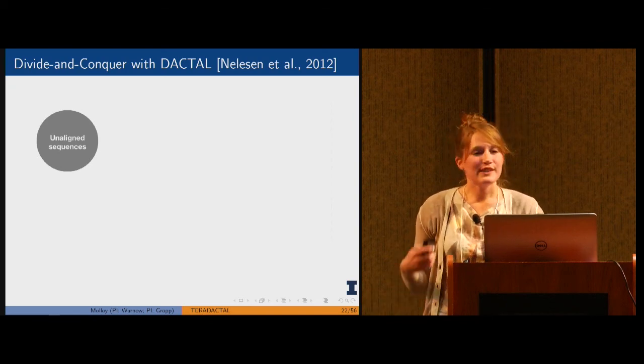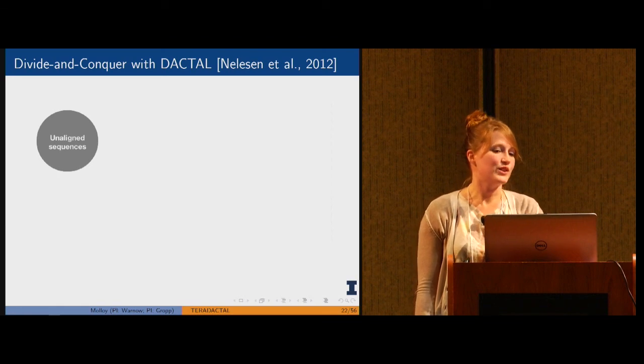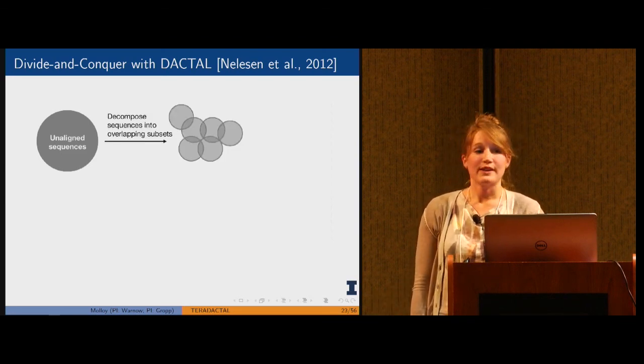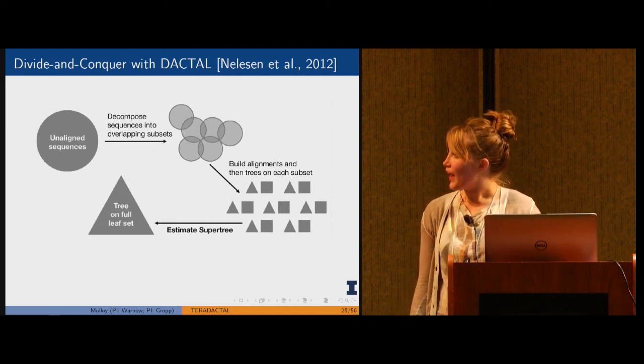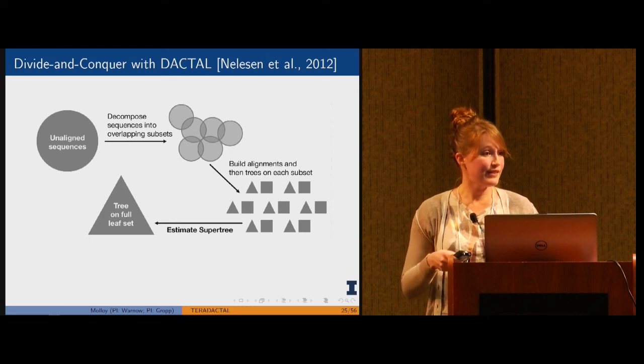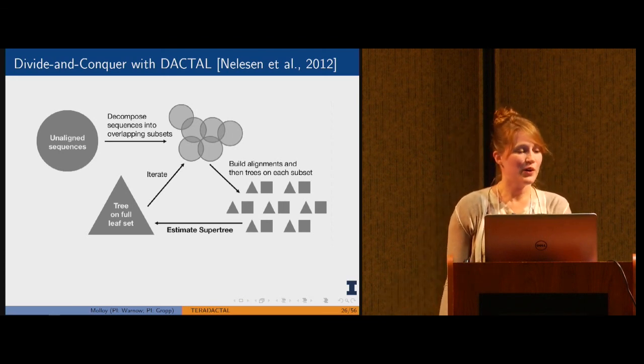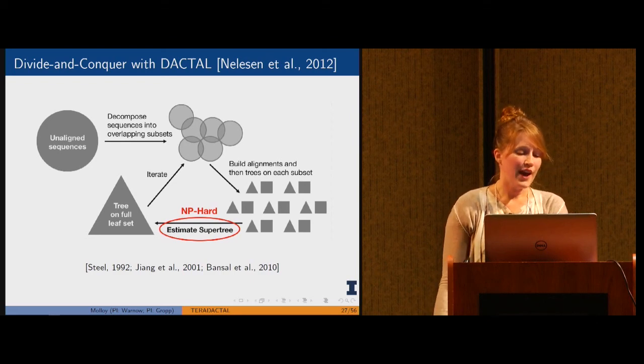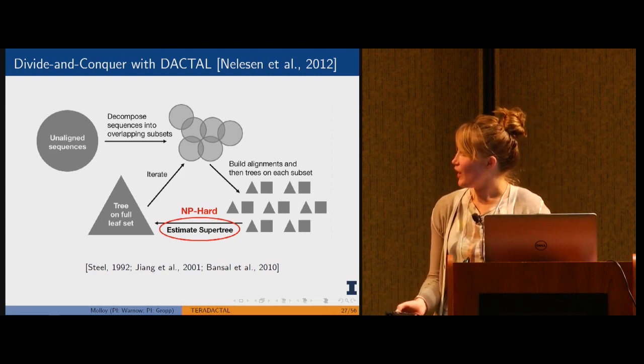We basically realized that we want to break up this n dimension, which is the number of sequences. There are some divide and conquer approaches to do this. One of them is called DACTAL from 2012. It will basically take unaligned sequences, divide them into overlapping subsets, estimate an alignment and tree on each subset, and then combine all of these trees by solving the supertree problem. It's important to note that estimating supertrees is hard, in fact NP hard under a variety of optimization criteria, and the heuristics don't work well on large data sets. Although we like this approach because it could potentially scale to large n, it doesn't work well in practice.